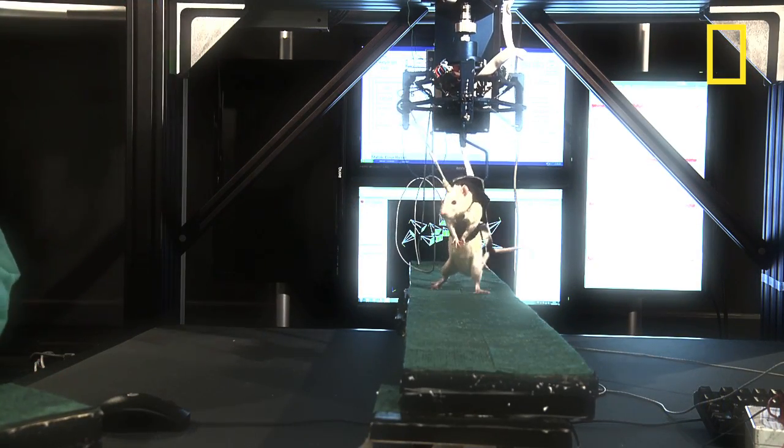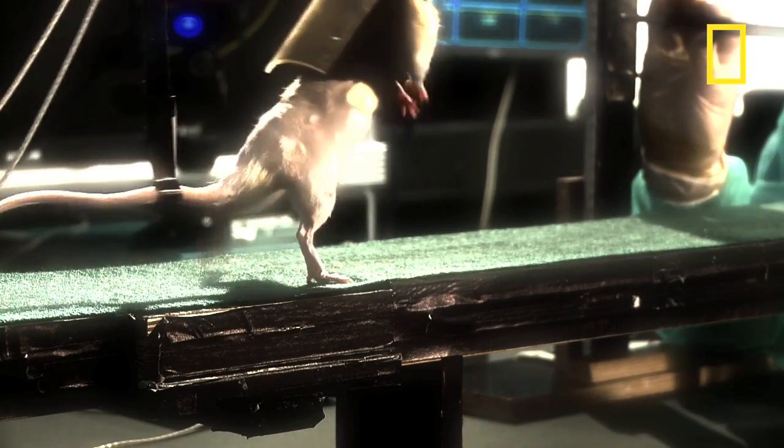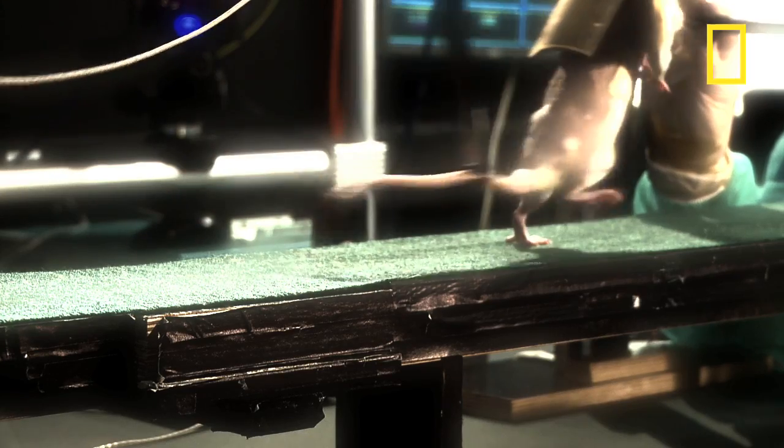While the robotic system holds the rats upright, the forward motion is powered by the rat. Previous studies have shown rats regain the ability to walk on a treadmill but not by themselves.